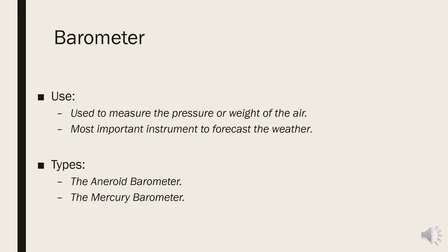Let us now discuss the barometer. A barometer is a weather instrument used to measure the pressure or weight of the air. It is probably the most important instrument in weather forecasting. There are two types of barometers: the aneroid barometer and the mercury barometer. Let us briefly study these types.